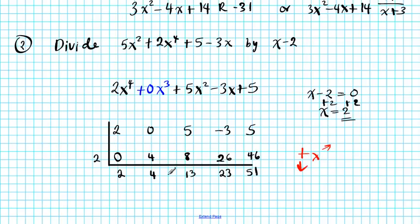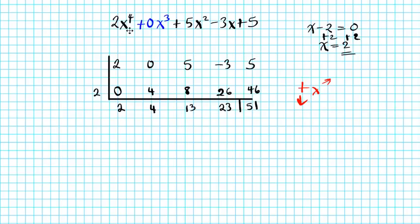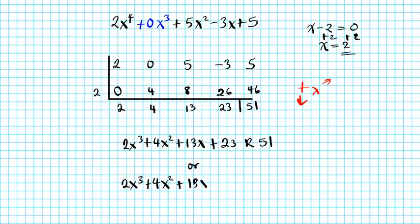So this is your depressed polynomial right here. Don't forget to draw a line. So, it's depressed in the sense that it's going to be 1 degree less than what we started with. So you're going to have 2x³ + 4x² + 13x + 23 remainder 51. So, there goes your answer. Or you can write it as,